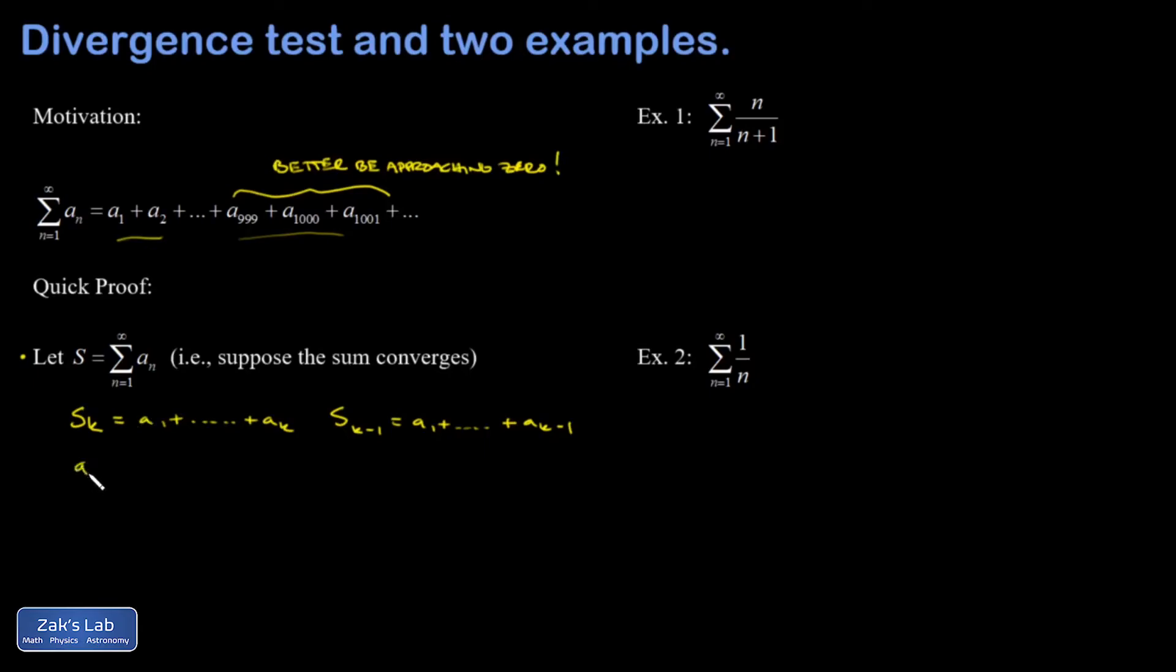a_k would be this partial sum minus this one. Everything cancels except that kth term, and that's what I'm trying to get a condition on. So that's why I'm going through the effort to isolate it.